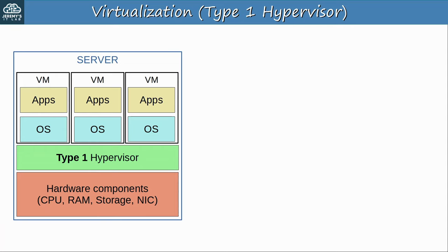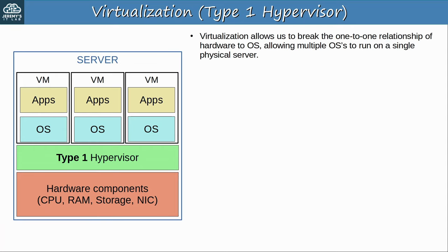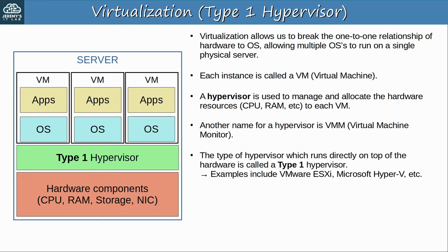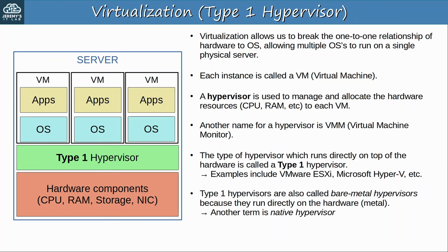But with virtualization it looks a bit different. Virtualization allows us to break the one-to-one relationship of hardware to OS, allowing multiple OS's to run on a single physical server. Each instance is called a VM, virtual machine. In the diagram, three virtual machines are running on a single physical server. A hypervisor is used to manage and allocate the hardware resources such as CPU and RAM to each VM. Another name for a hypervisor is a VMM, virtual machine monitor. The type of hypervisor which runs directly on top of the hardware is called a type 1 hypervisor — examples are VMware ESXi and Microsoft Hyper-V. They are also called bare-metal hypervisors because they run directly on the hardware, the metal.